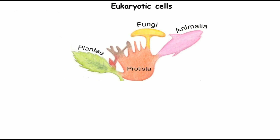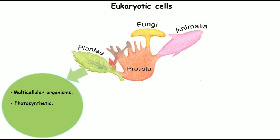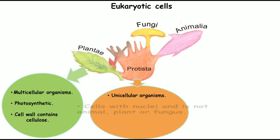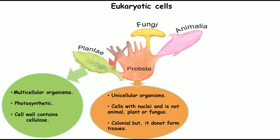Eukaryotic cells are divided into four kingdoms: Plantae, Protista, Fungi, and Animalia. Plantae are multicellular organisms capable of photosynthesis — they are autotrophs that synthesize their own food, and their cell walls contain cellulose. Protista are unicellular organisms that have a nucleus but are not comparable to animals, plants, or fungi, so they are placed in their own kingdom. Individual protists can come together to form colony-like structures but do not form true tissue.